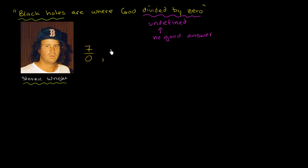Seven divided by zero, eight divided by zero, negative one divided by zero. We say all of these things are just undefined.